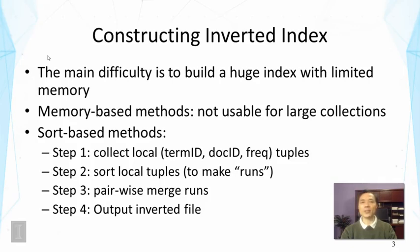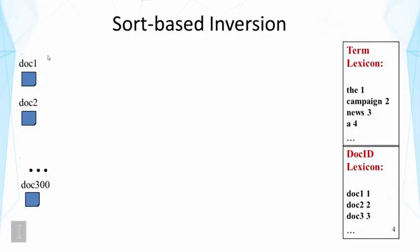In step 3, you do pairwise merging of these runs until you merge all of them and regenerate a single inverted index. The illustration shows documents on the left, and on the right a term lexicon and a document ID lexicon. These lexicons map string-based representations of document IDs or terms into integer representations, and map back from integers to string representations. Integers are easier to handle — they can be used as array indices and are easier to compress.